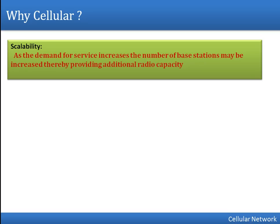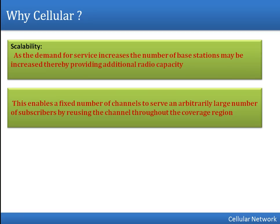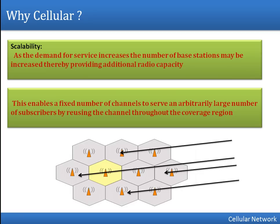If you are going to reuse a frequency in another cell, they must fulfill a distance criteria — we will discuss the formula for finding that distance. Scalability issues can be handled easily in cellular networks. For example, if we find that the number of users is increasing, we can install one more base station and use the same frequency in that cell, assuming the signals of those two base stations will not interfere — meaning the distance between them must be large enough.